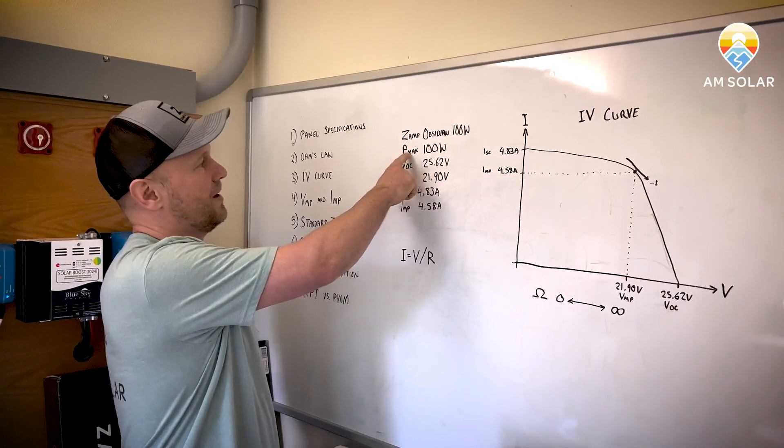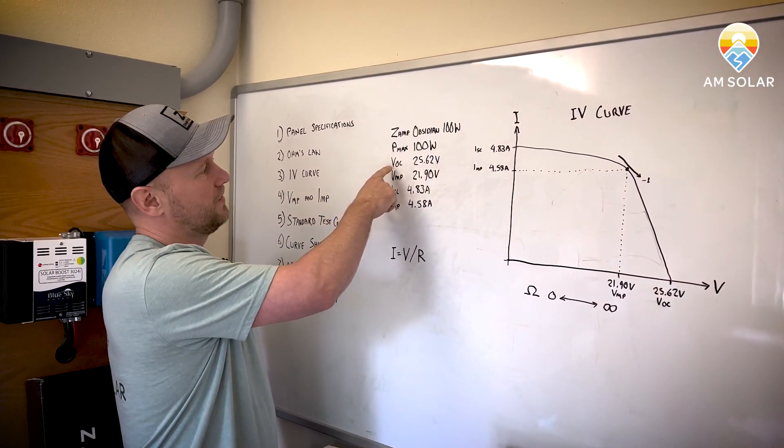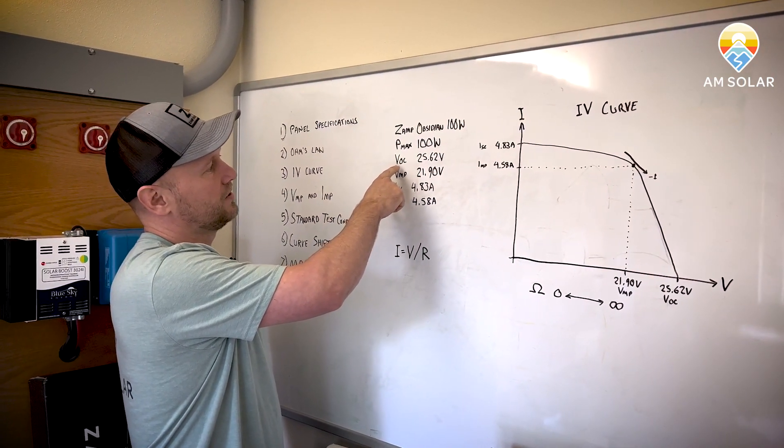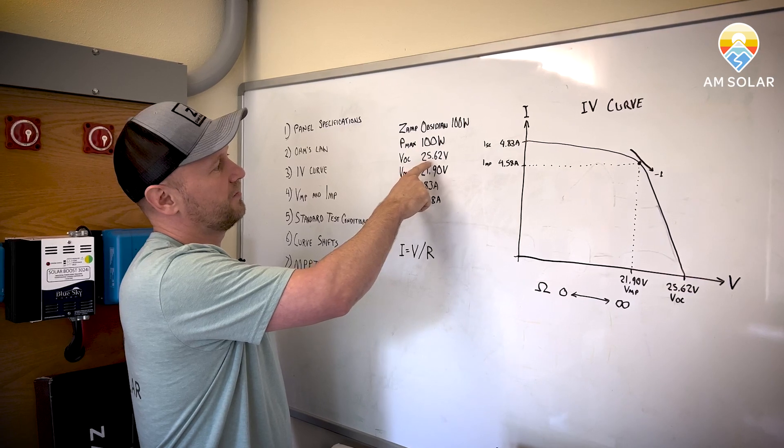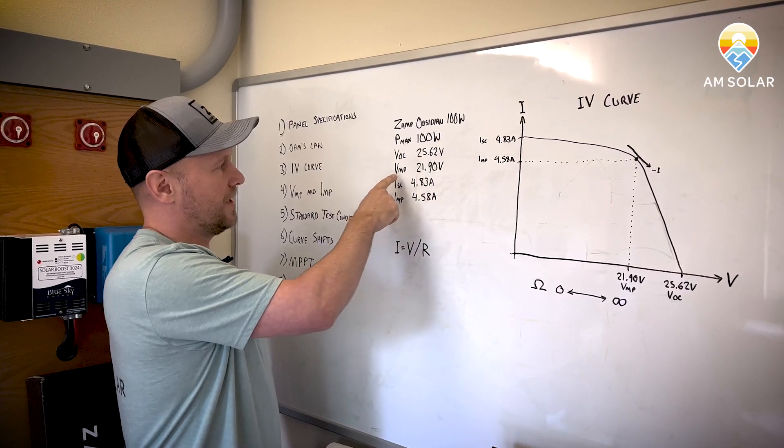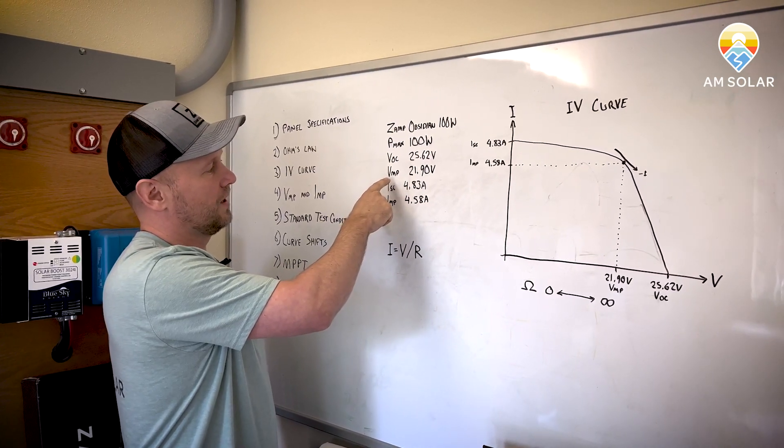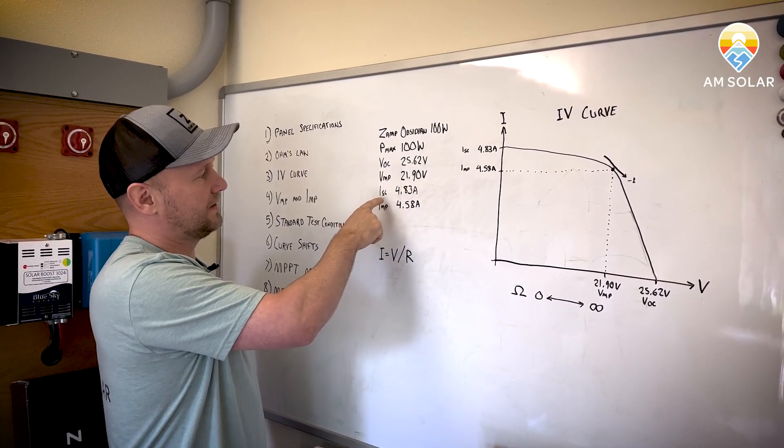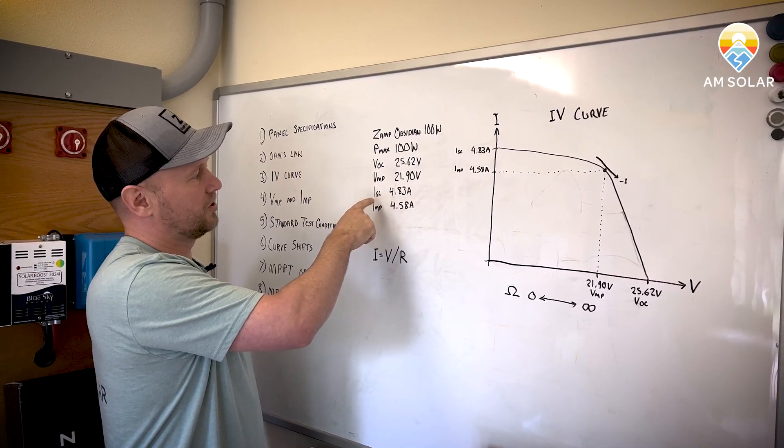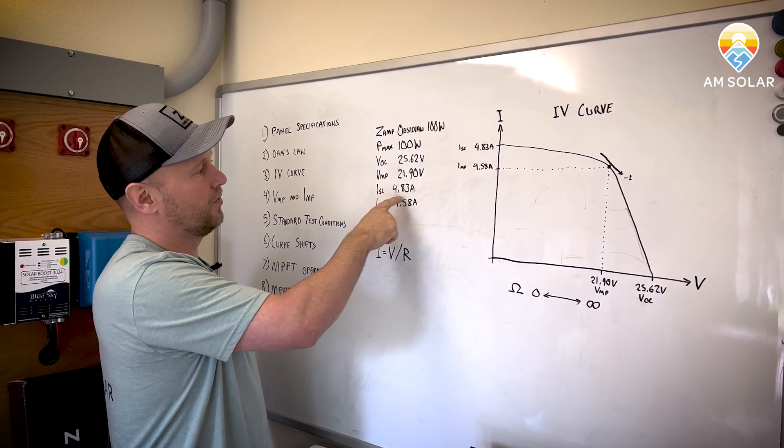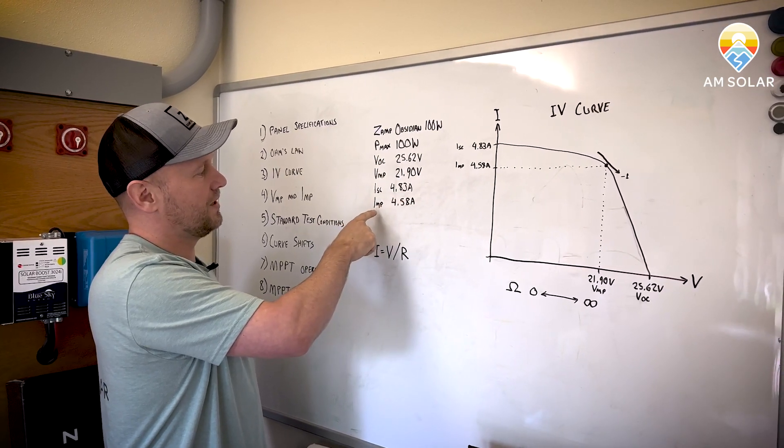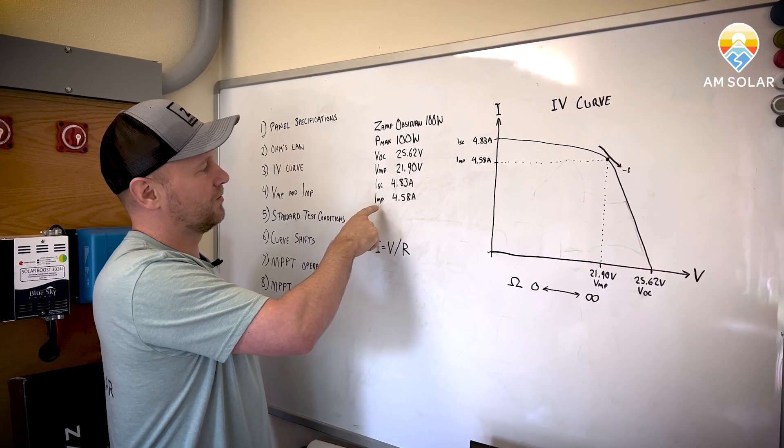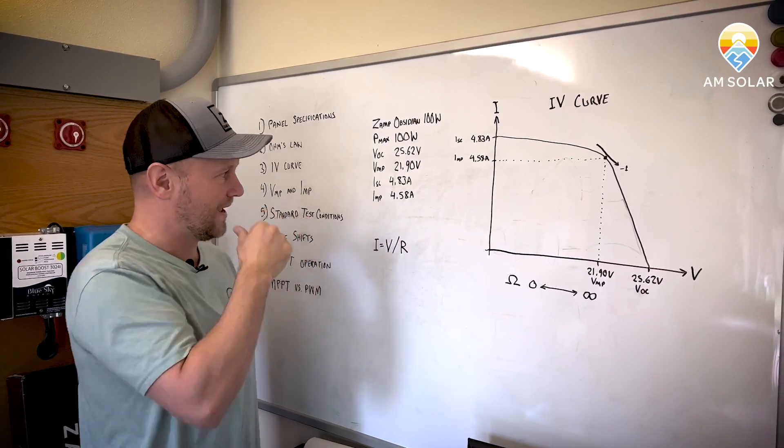So we've got Pmax 100 watts, VOC that stands for voltage open circuit 25.62 volts, VMP which is voltage at maximum power 21.9 volts, ISC is short circuit current 4.83 amps, IMP that's current at maximum power 4.58 amps.